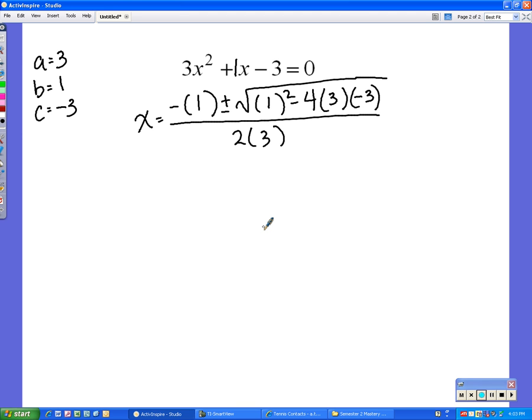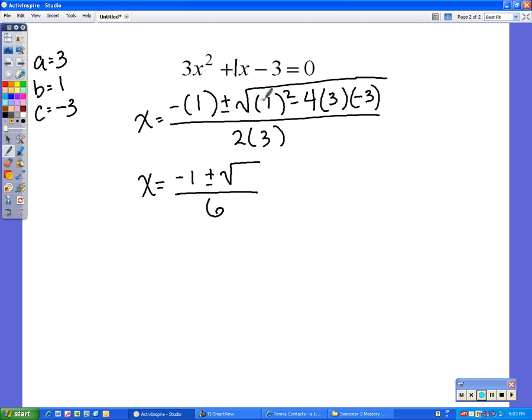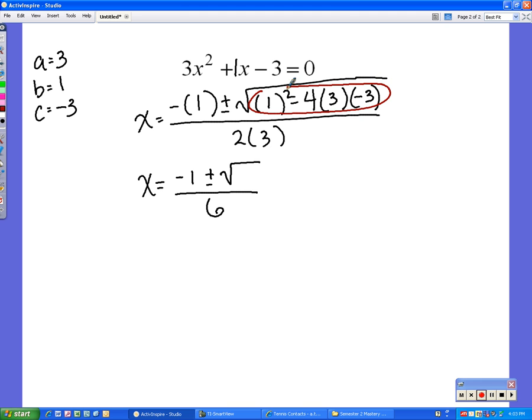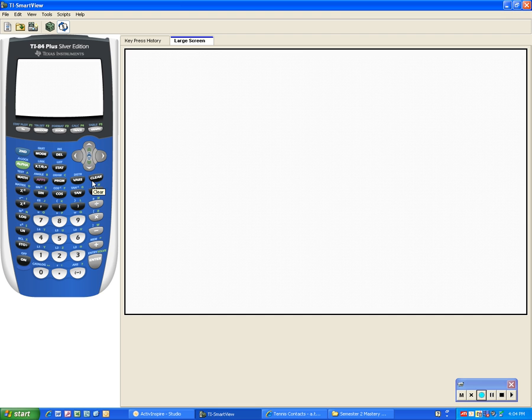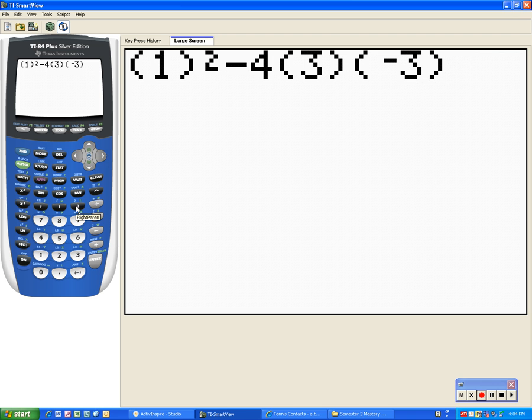Alright. So, now I'm going to go ahead and do things in a slightly different order this time. x equals the opposite of positive 1 is negative 1 plus or minus the square root. I haven't put that in the calculator yet, so I'm going to leave that blank for now. All over 2 times 3 is 6. Now, I'm going to go ahead and take this bit that was inside my square root, and I'm going to put that in the calculator. So, this time we're doing 1 squared minus 4 times 3 times negative 3. So, we have 1 in parentheses that's being squared minus 4, parenthesis 3, parenthesis negative 3. Let's see if it got everything there. Close that parenthesis. Enter.